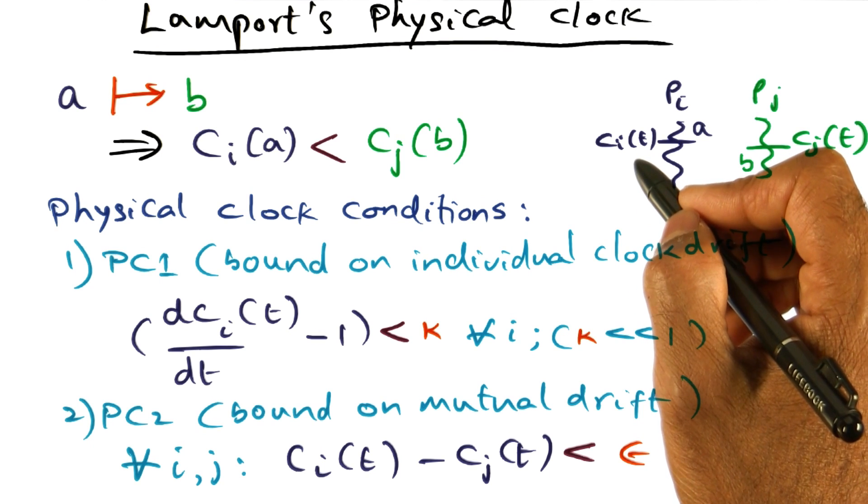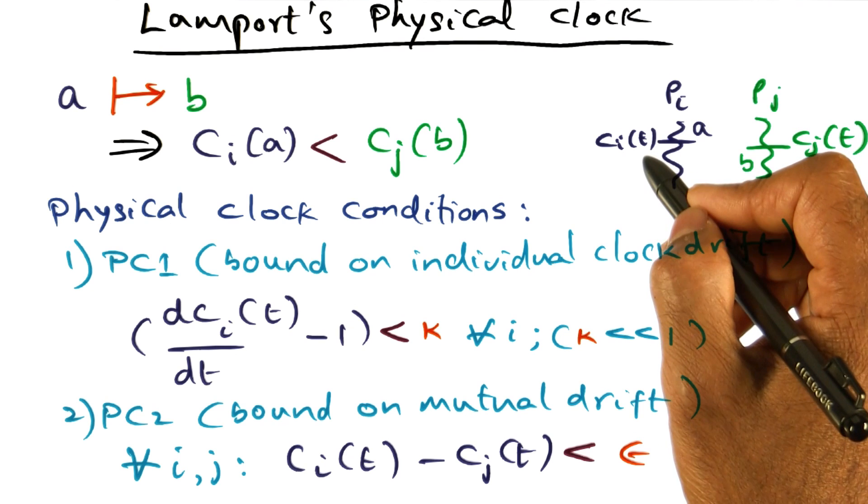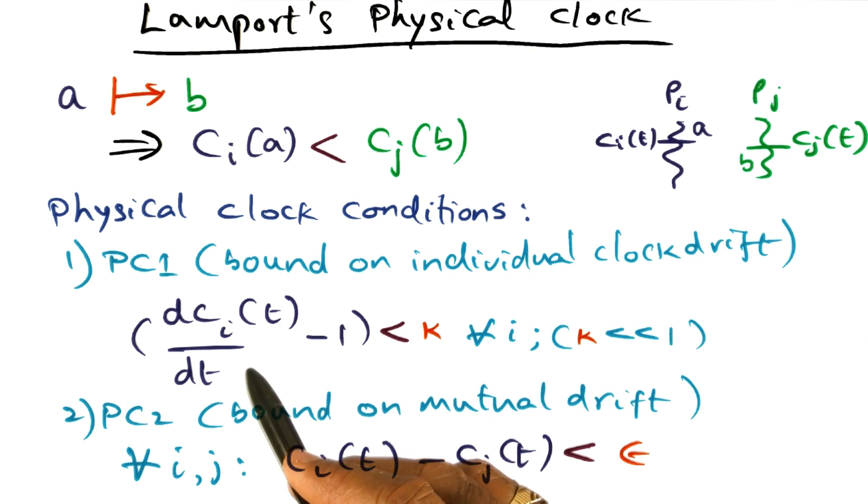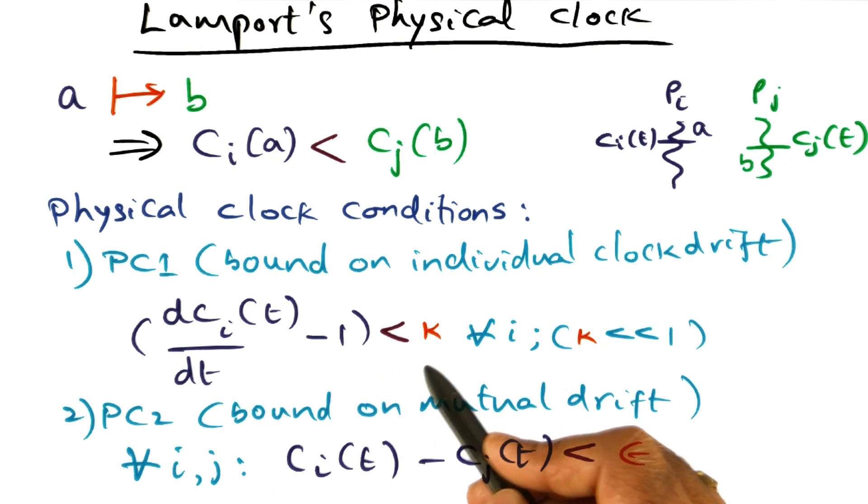Now, if it doesn't, that's when we are saying it is drifting with respect to t. And so what this equation is saying is dci over dt is the clock drift. The absolute value of the drift is very, very small.